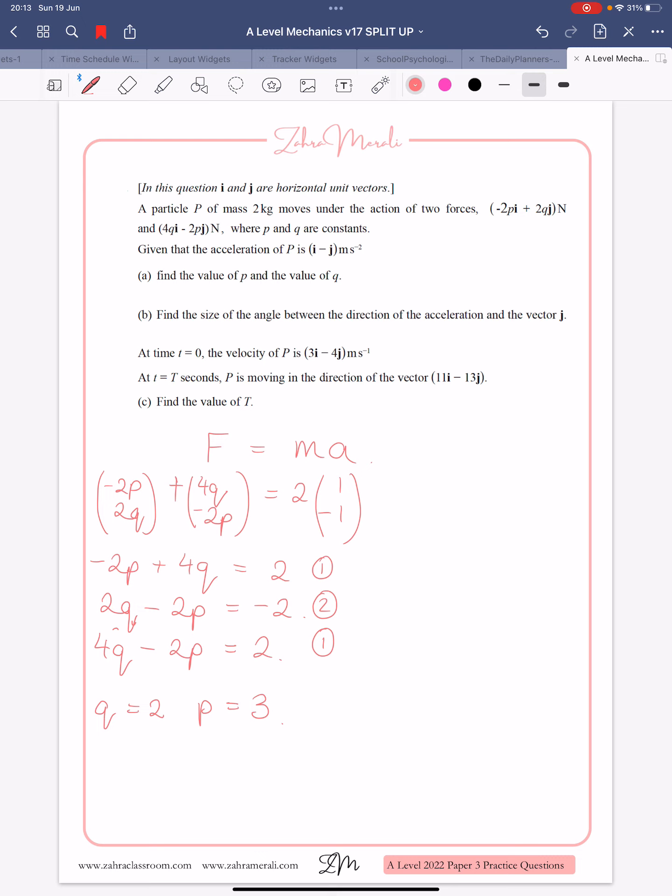So now I've got my P and my Q, which is the first bit. You could have just taken them away from each other, solved it as you normally would. And then for part B, you're going to find the size of the angle between the direction of acceleration and the vector J.